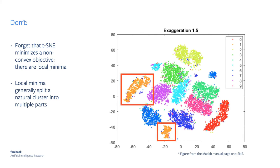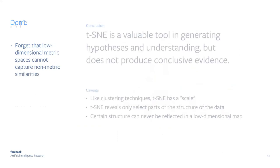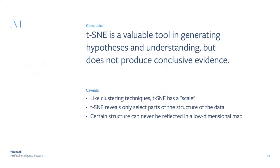Also keep in mind that the KL divergence objective is non-convex and will have local minima, which typically take the form of splitting a natural cluster into multiple parts — for example, a cluster of ones or fives splitting in two. It is perfectly acceptable to run t-SNE multiple times on the same data and pick the best solution in terms of the KL divergence value. To conclude: t-SNE is a valuable tool for generating hypotheses, but it doesn't produce conclusive evidence. It reveals only select parts of data structure, and some structure simply cannot be reflected in a low-dimensional map.